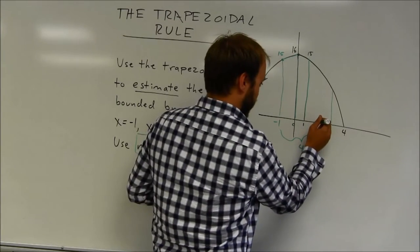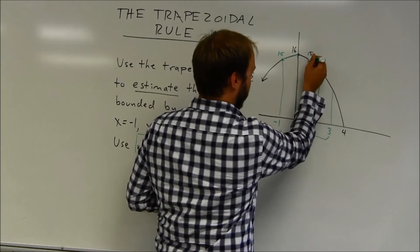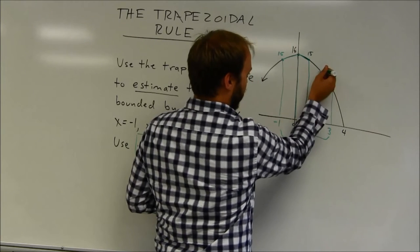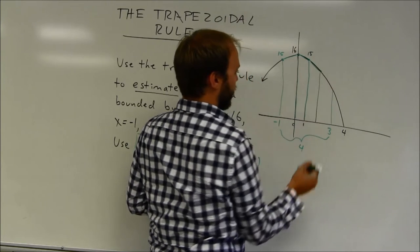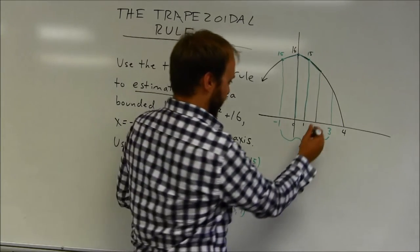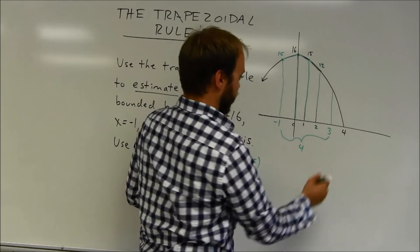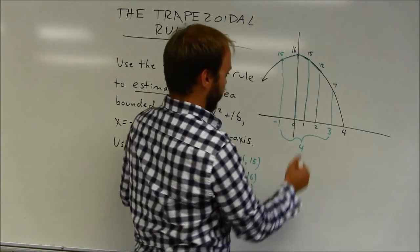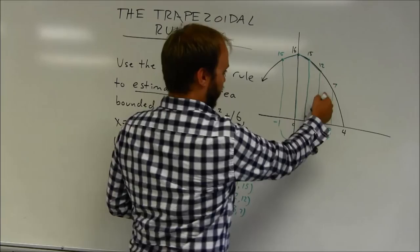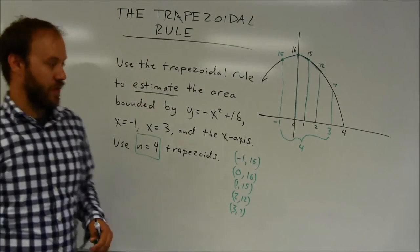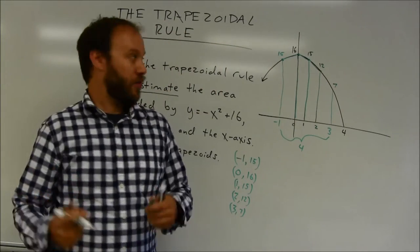I've got a trapezoid that goes from 1 to 2. So go ahead and finish that trapezoid there. All of these trapezoids will be slightly under the curve in this case. Remember, my functional value of 2 is 12. And then my functional value at 3 is 7. So you see I have 1, 2, 3, 4 trapezoids. That matches what the problem asked me to do. Now I can go through and use the formula.